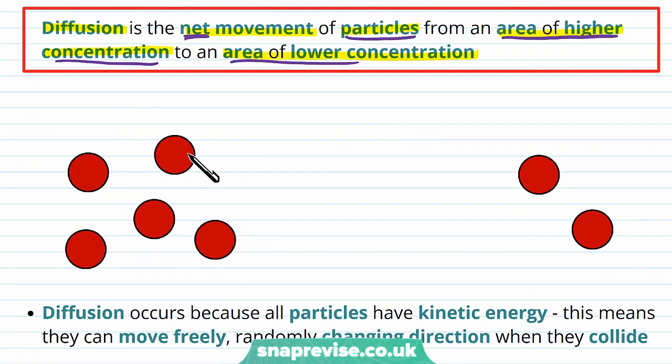So for example, we've got an area where there are more particles here. Each of them have their own kinetic energy, randomly moving around. Overall, because there is less over here, they're going to move in this direction.